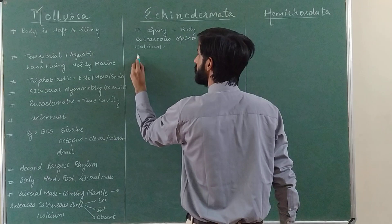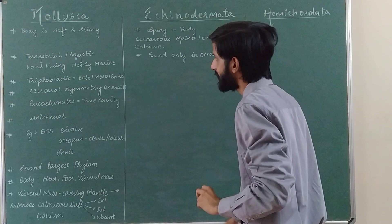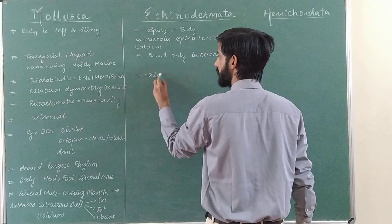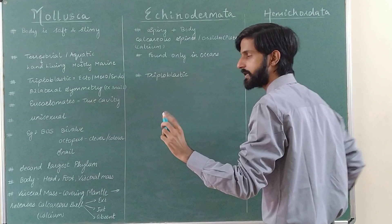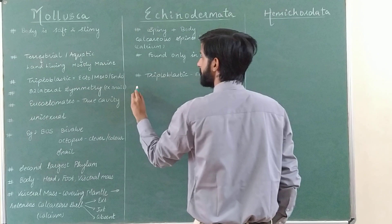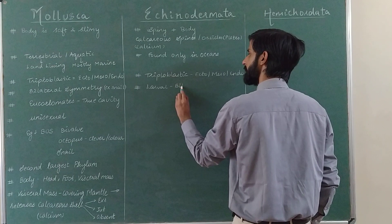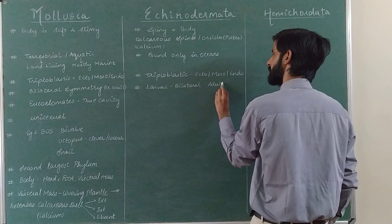Echinodermata is found only in oceans. They are also triploblastic — body made from three germ layers: ectoderm, mesoderm, and endoderm. In terms of symmetry, when Echinodermata is in the larval stage it shows bilateral symmetry, and when it is in the adult stage it shows radial symmetry.